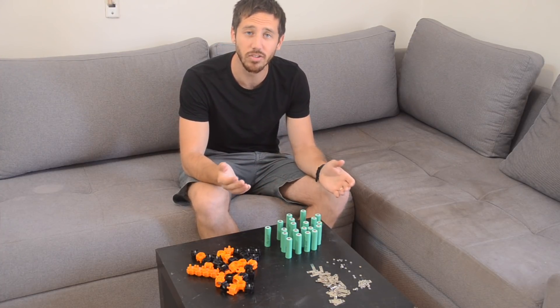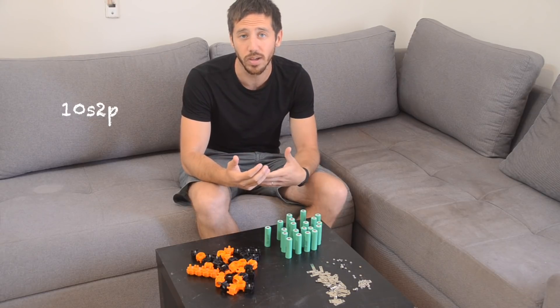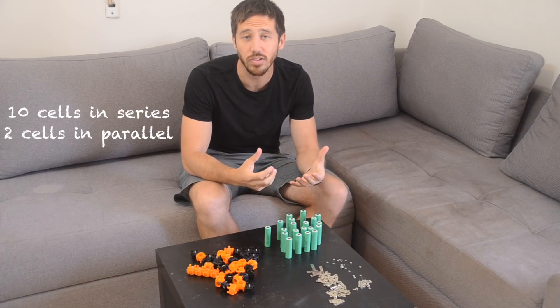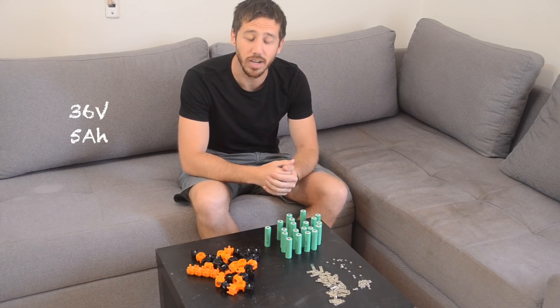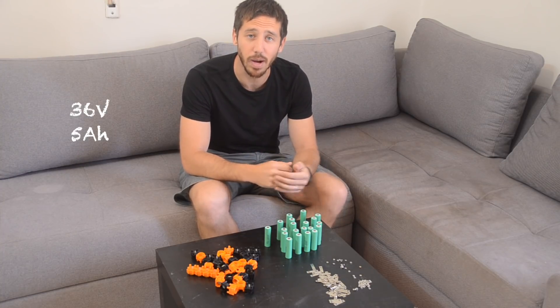I'll also be using a configuration that's called 10S2P which means that we're going to have 10 cells in series and 2 cells in parallel. That's going to give us a 36 volt battery and with these cells a 5 amp hour capacity battery.